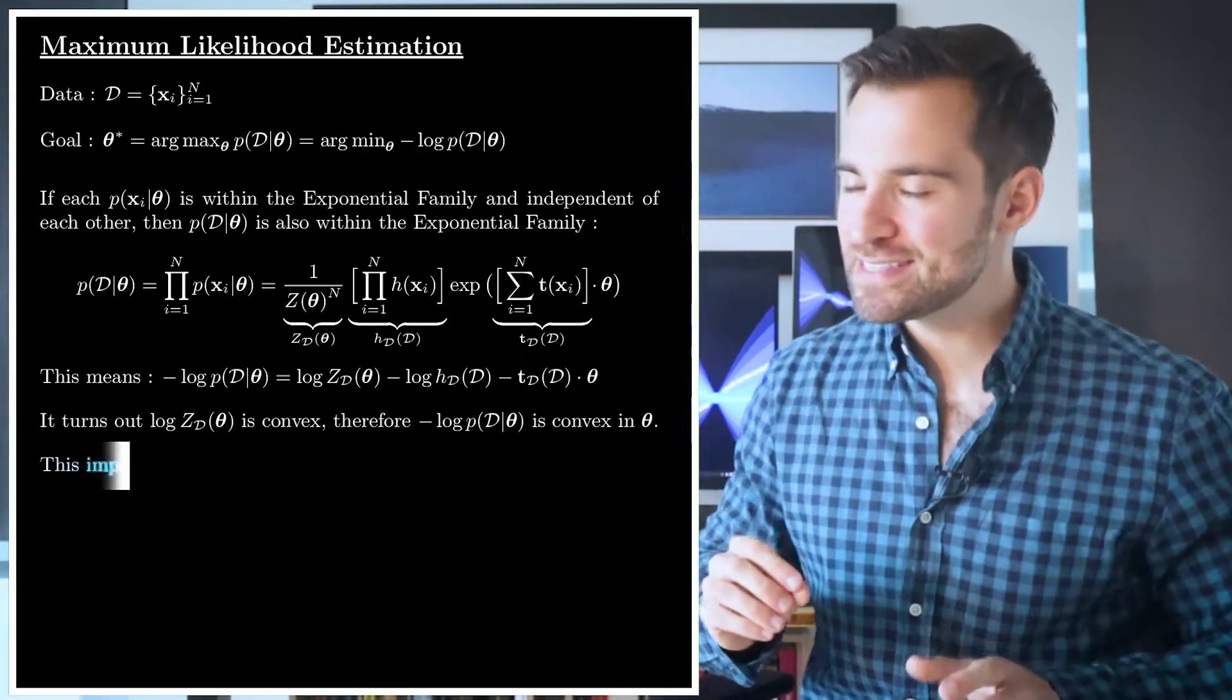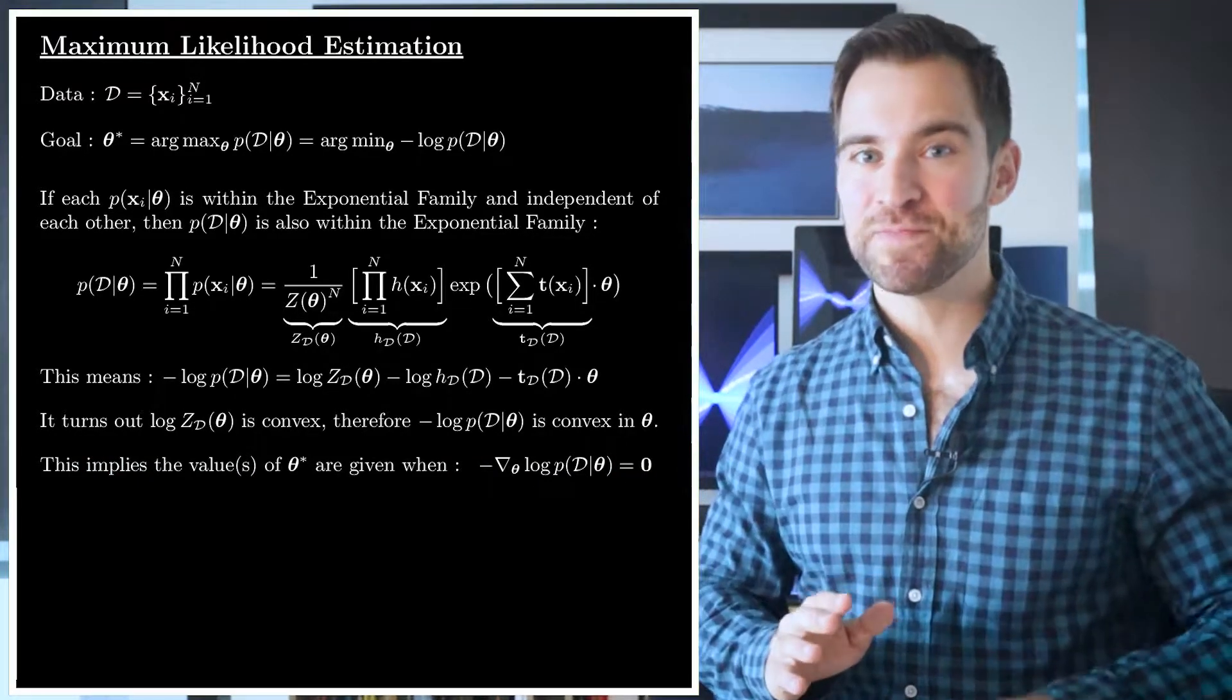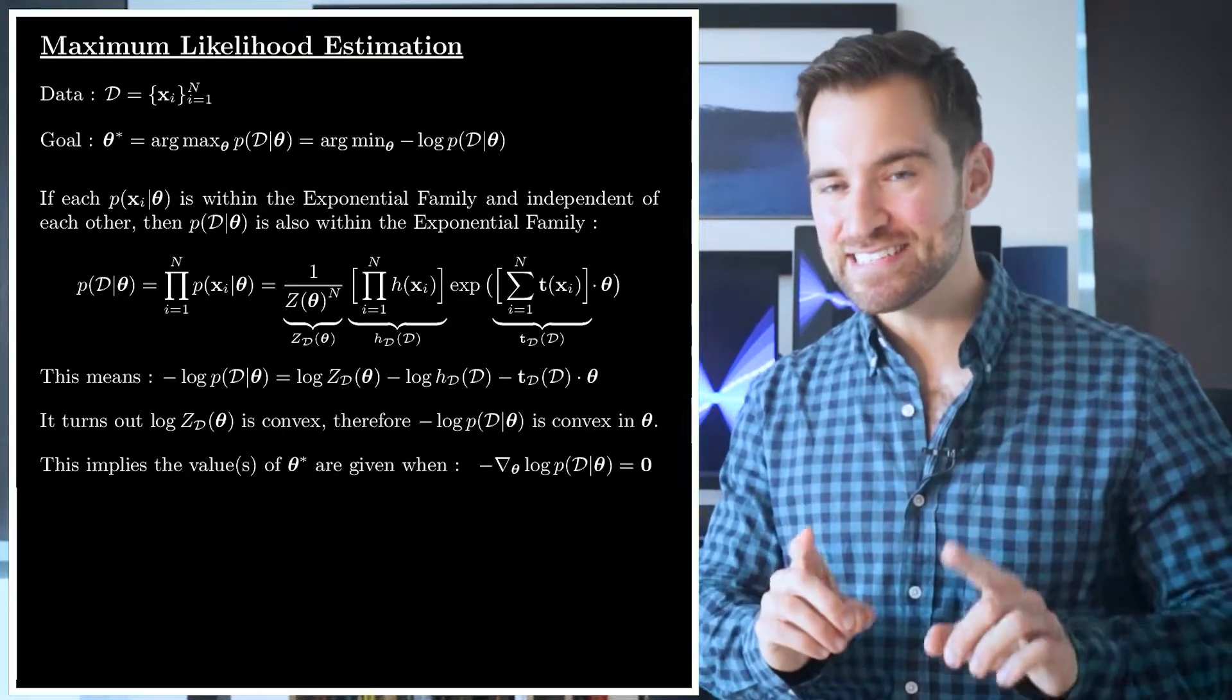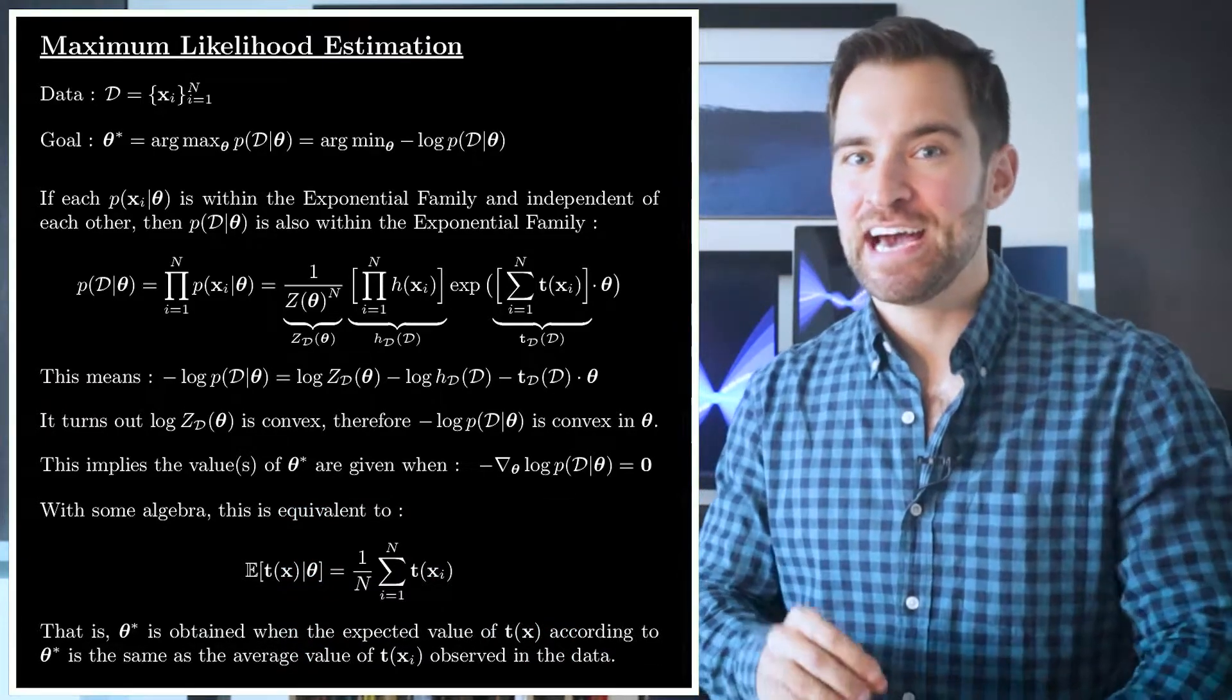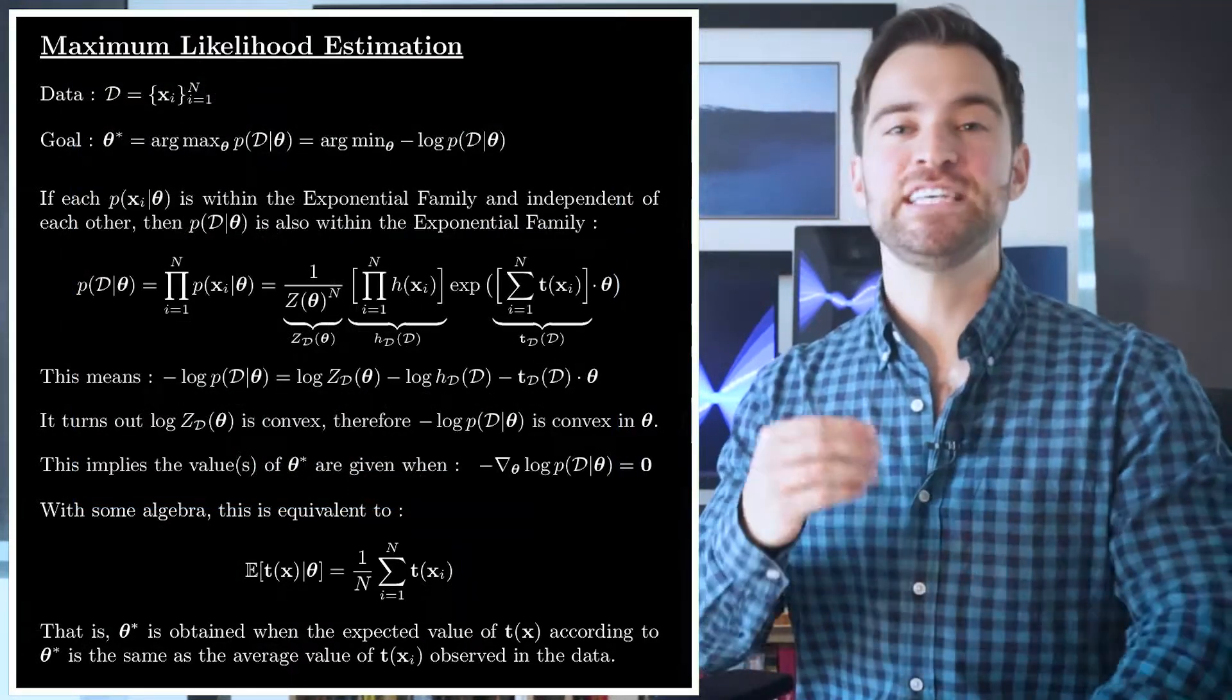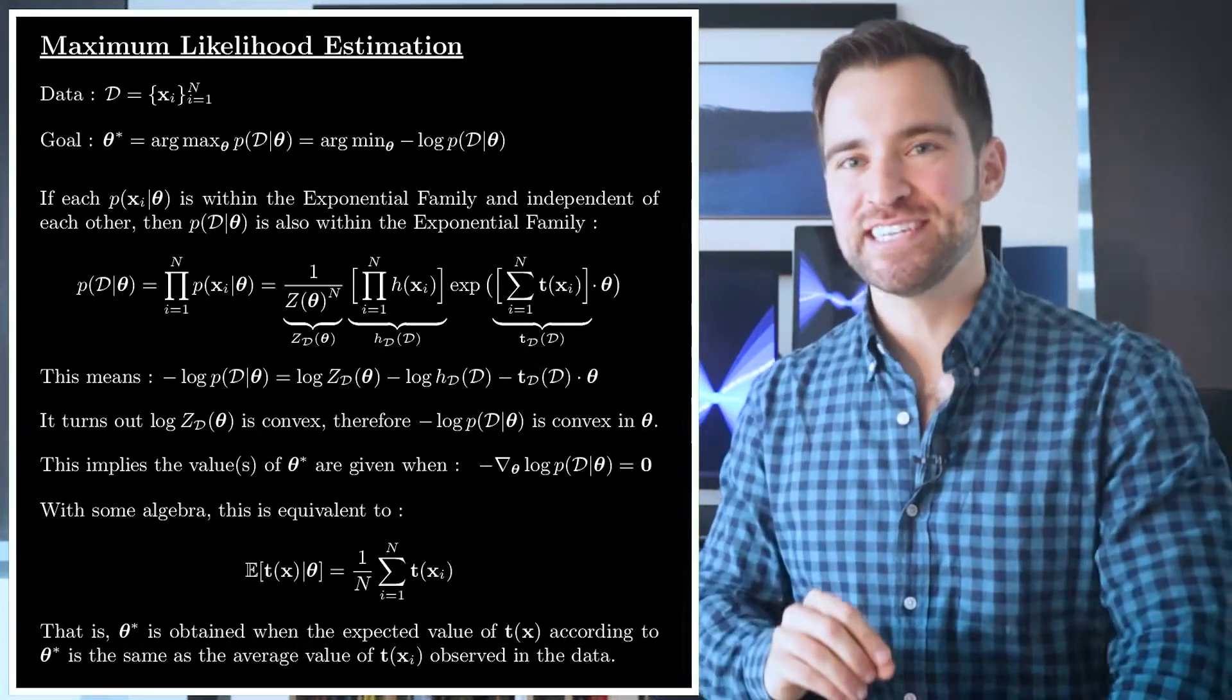For now, we can use this idea to get more out of our negative log likelihood. Convexity implies that whenever the gradient is zero, we are maximizing the likelihood. And it turns out that this is equivalent to saying something more informative. That is, the expected value of the sufficient statistics equal their average value seen in the data.